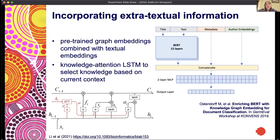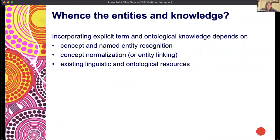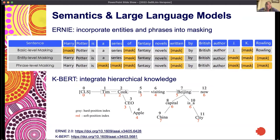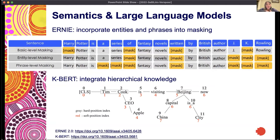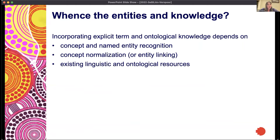There are different approaches to this, but in all cases what we're trying to do is take advantage of additional information about the words or entities represented implicitly or explicitly in the text. Of course, if we're going to leverage entities and background knowledge, we have to ask where that comes from. Assuming we already have NLP models that can do a good job of named entity recognition or concept recognition, in order to incorporate hierarchical information we need to take advantage of concept normalization or entity linking methods, and ultimately relate those entities into existing linguistic and ontological resources.